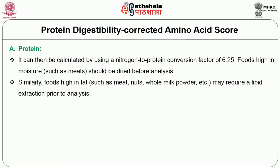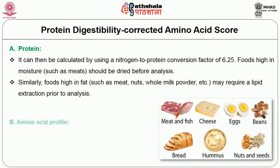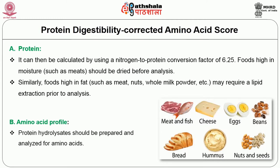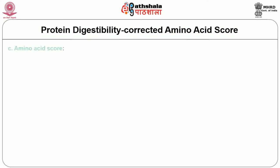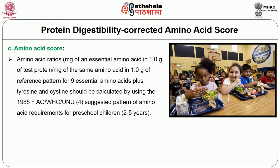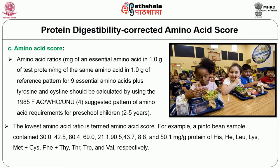Foods high in moisture such as meats should be dried before analysis. Similarly, foods high in fats such as meats, nuts, and whole milk powder may require lipid extraction prior to analysis. For the amino acid profile, protein hydrolysates should be prepared and analyzed for amino acids. The amino acid score is calculated as: milligrams of an essential amino acid in 1 gram of test protein divided by milligrams of the same amino acid in 1 gram of reference pattern, for 9 essential amino acids plus tyrosine and cysteine, using the 1985 FAO/WHO/UNU suggested pattern of amino acid requirements for pre-school children aged 2 to 5 years. The lowest amino acid ratio is the amino acid score.